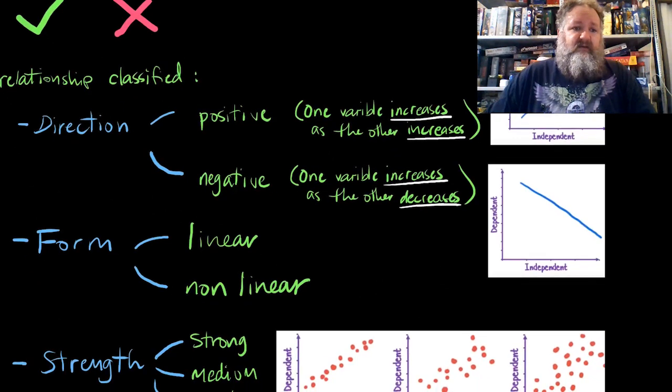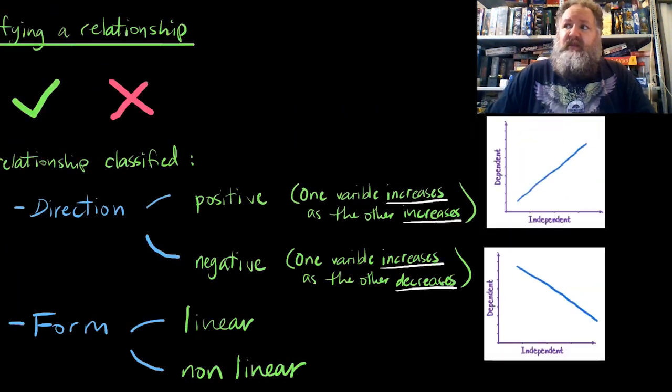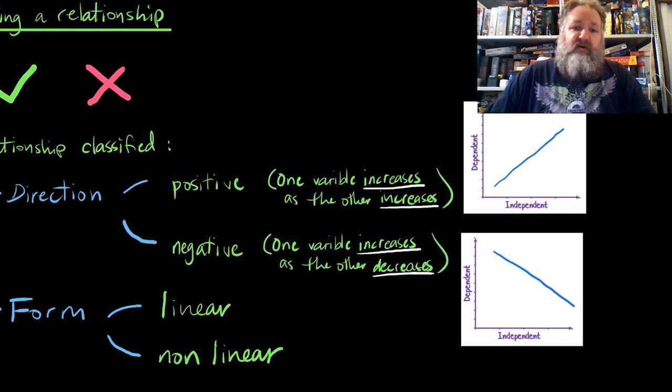We can have direction of data. The relationship can be in a direction. For example, we can have a positive direction for our relationship, so as one variable increases, the other also increases. Here's my x-axis - my independent - my y-axis - my dependent. You'll see that my data here is traveling upwards in both directions. As the independent is increasing, my dependent is increasing. This is a positive direction. This little graph underneath it: as you see, my independent is increasing, my dependent is decreasing. This is a negative direction.